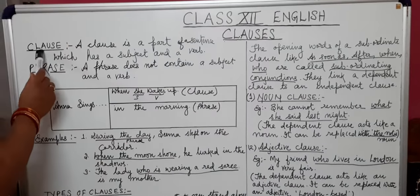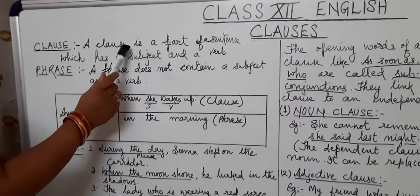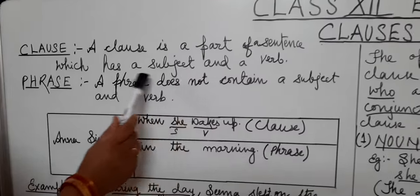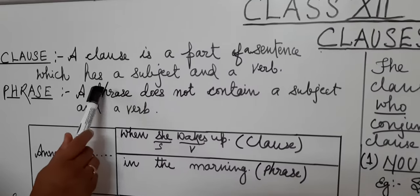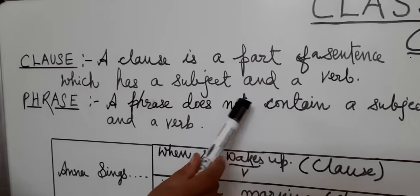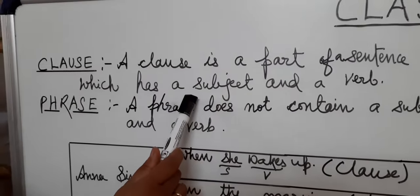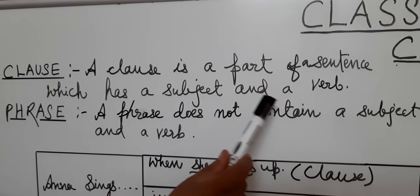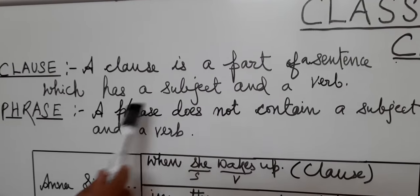So what is a clause? A clause is a part of a sentence which has a subject and a verb. Clause mein ek subject hoga aur ek verb hoga.